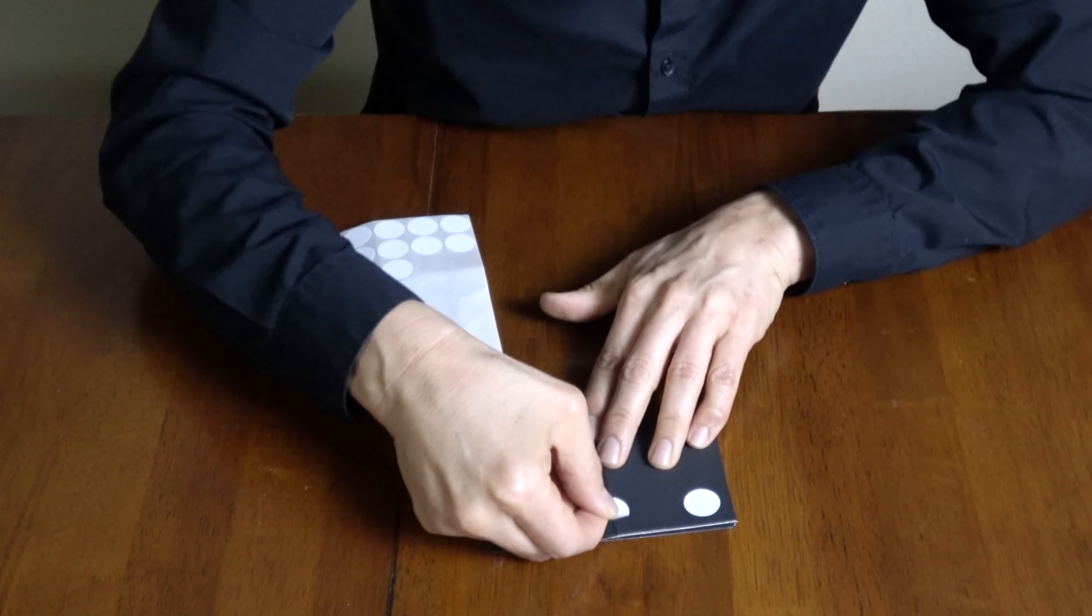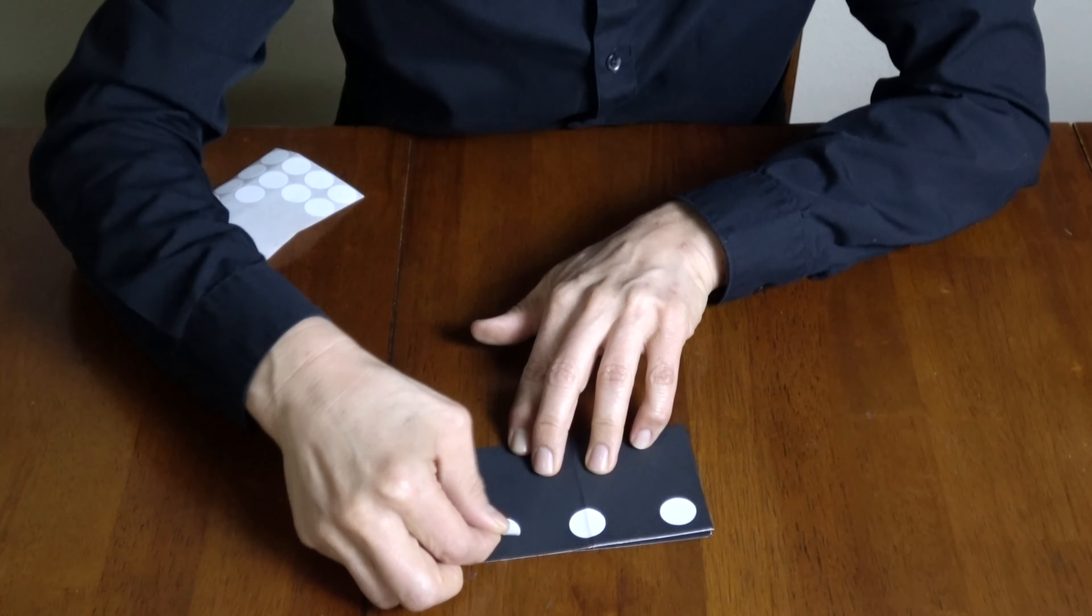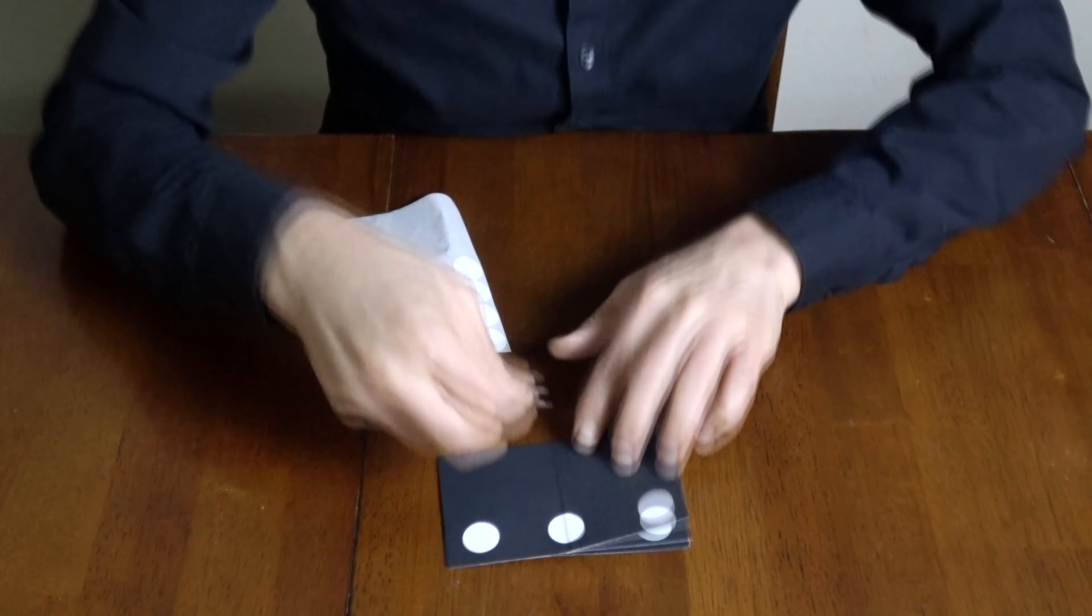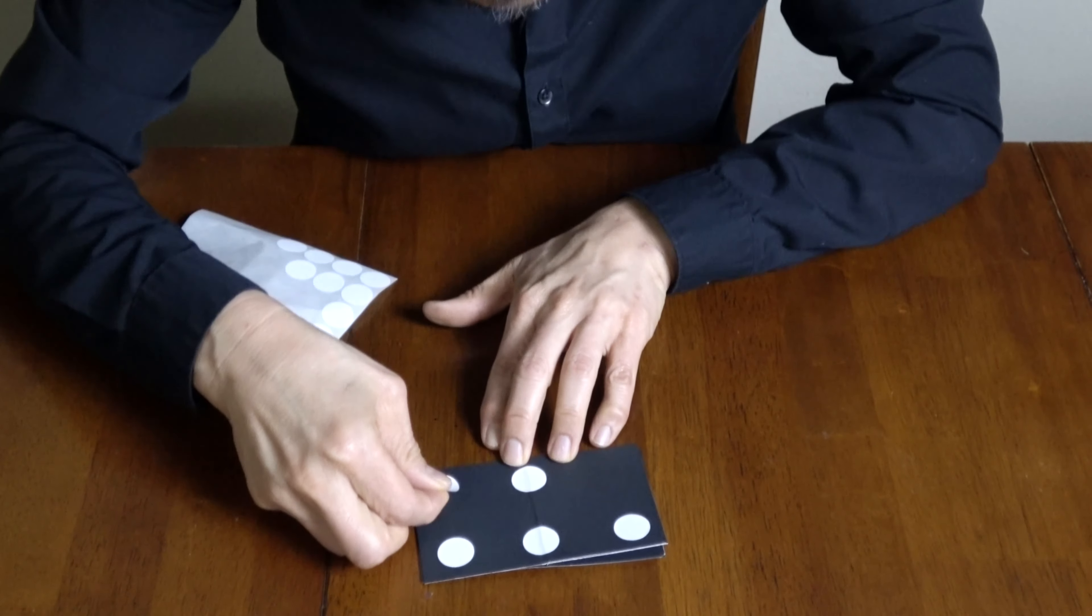Now for the real secret, what you're going to do is take this flap and move it over here. And now we're going to put that crazy configuration for the finale in.